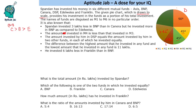The difference between the highest amount and the lowest amount invested in any fund is 11 lakhs. This is the lowest and this is the highest, so the difference is 11 lakhs. He invested 6 lakhs less in Franklin than in BNP, so BNP is more than Franklin. We can write Franklin as BNP minus 6.